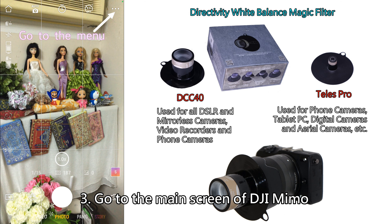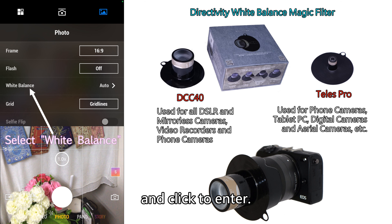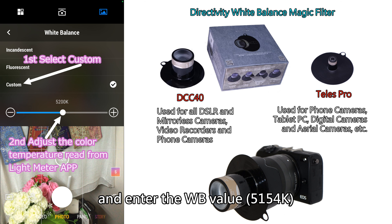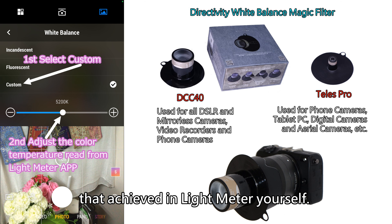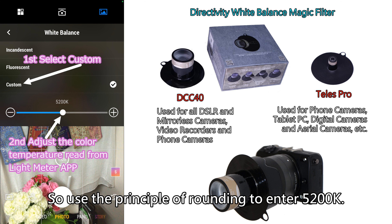Step 3: Go to the main screen of DJI MIMO and click its menu. Step 4: Find white balance in the photo tab and click to enter. Step 5: Click to select 'Custom' at the bottom and enter the white balance value obtained from Light Meter. The data is based in 100 Kelvin units, so using the principle of rounding, enter 5200K.